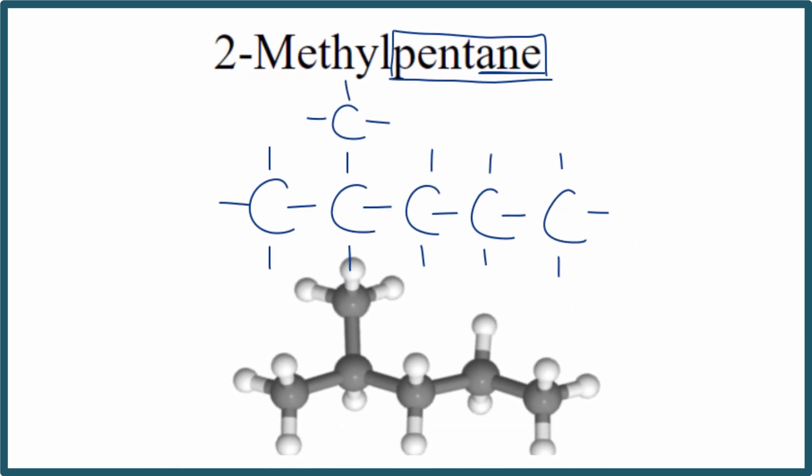You could even draw it like this, where you just draw lines. And where the lines, the ends, these represent the carbons. And then you just don't draw the hydrogens. So these are three representations of 2-methylpentane.